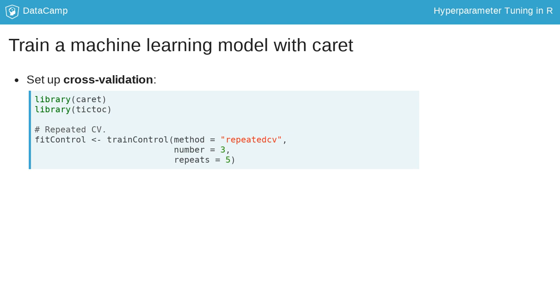Our validation scheme is defined in the trainControl function. We will do 5 times 3 repeated cross-validation, which means repeating 3-fold cross-validation 5 times.